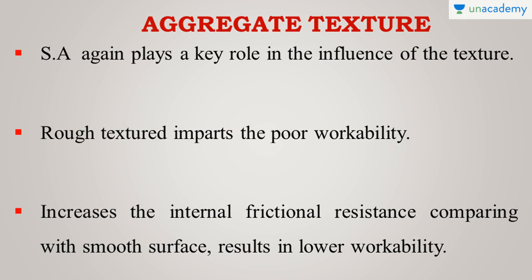Now let's move on to the texture aspect of the aggregate. Surface area again plays a key role in the influence of texture. If the texture is too rough or rugged, the surface area increases. A smooth surface has a particular surface area, but if the texture is rough, there will be many depressions and imperfections. These imperfections and depressions increase the surface area and therefore increase internal frictional resistance compared with a smooth surface. This results in lower workability. The smooth surface offers more workability than rough surfaces — this is one prime reason why natural sand is one of the best aggregates available.